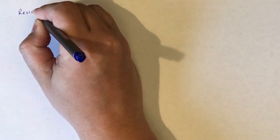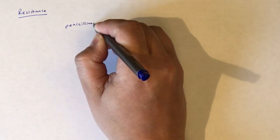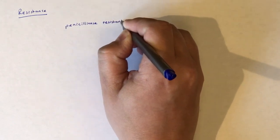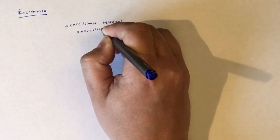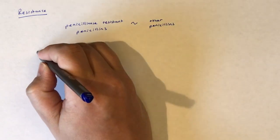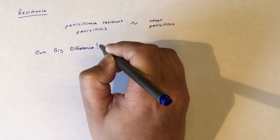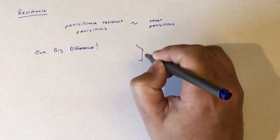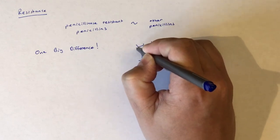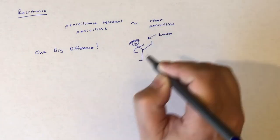Resistance to penicillinase-resistant penicillins is very similar to other penicillins. However, there is one key difference. As the name implies, penicillinase-resistant penicillins are less susceptible to penicillinase or beta-lactamase when compared to other penicillins. Specifically, penicillinase-resistant penicillins are resistant to the penicillinase produced by Staphylococcal species, for example, S. aureus and S. epidermidis.